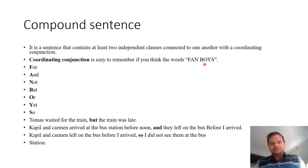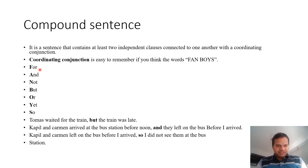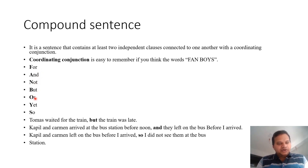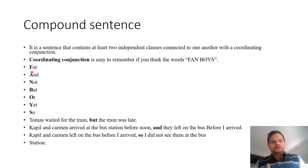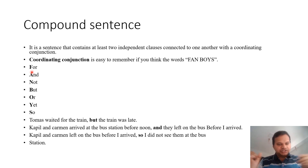If you think of the word FANBOYS — for example: F for 'for', A for 'and', N for 'nor', B for 'but', O for 'or', Y for 'yet', S for 'so'. These are the coordinating conjunctions. What do they do? They connect two independent clauses.